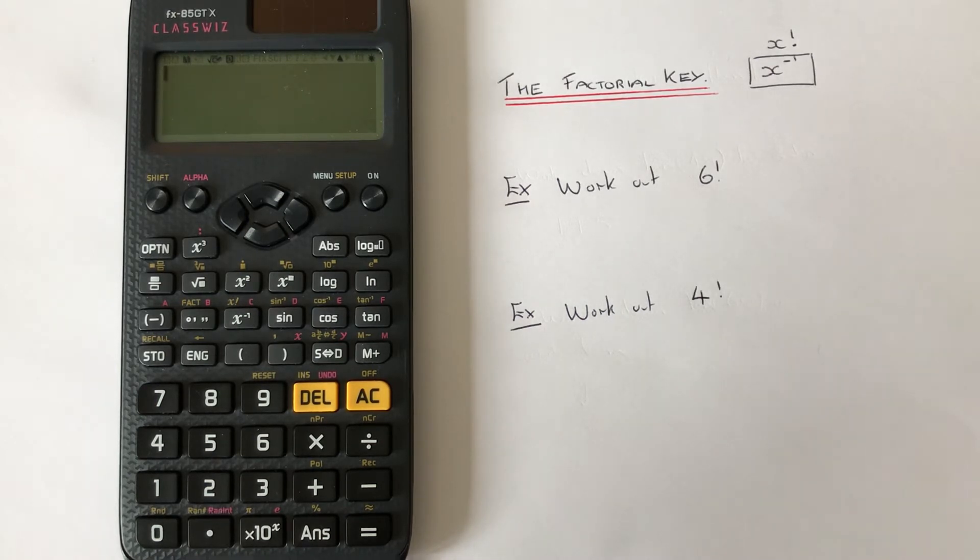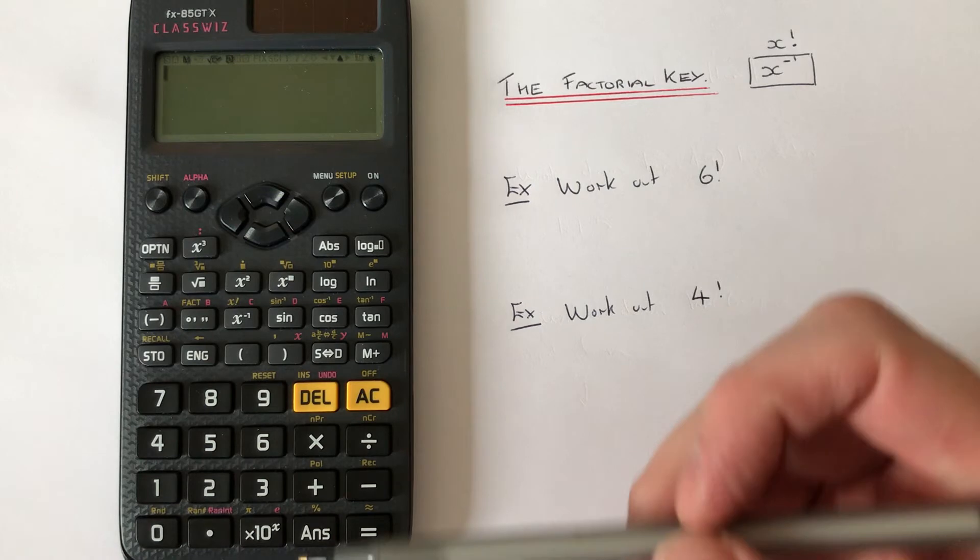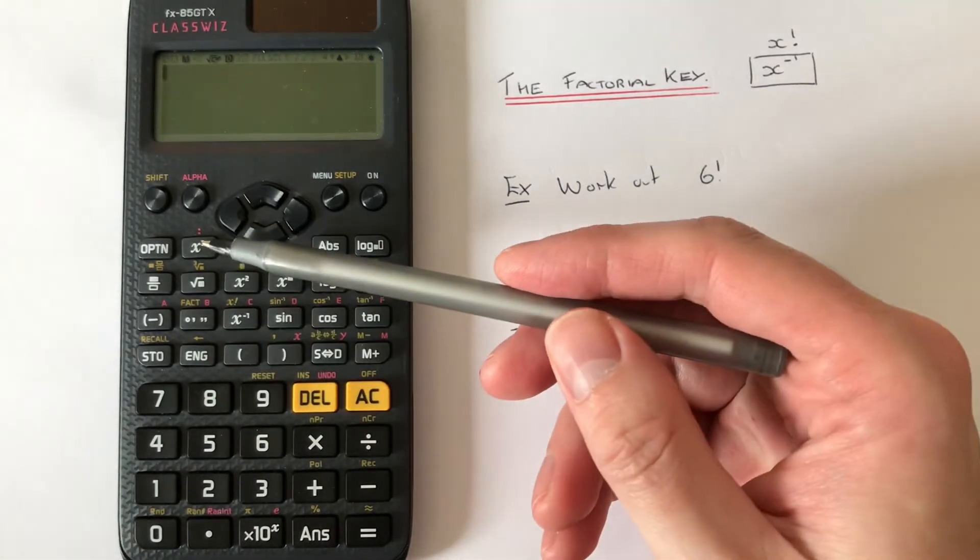The factorial key can be found on the third row of the scientific calculator, and it is on the second function of the X to the power minus one button.